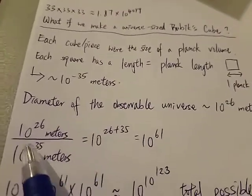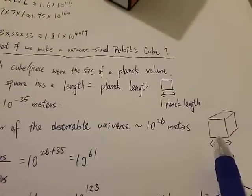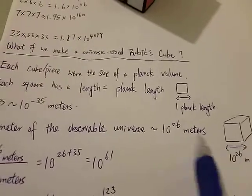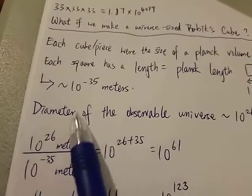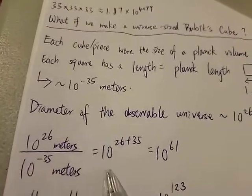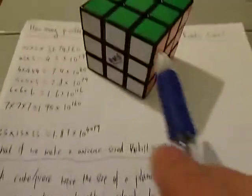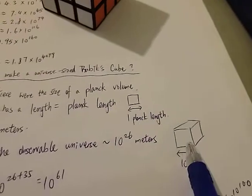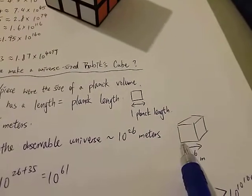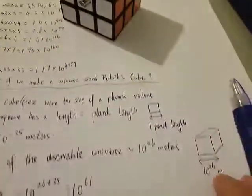So the formula will be this: 10 to the 26, the length of the diameter of the observable universe, divided by 10 to the minus 35 meters. And we get 10 to the 61 of these squares. That means in this universe sized cube, we can fit 10 to the 61 squares inside of it.